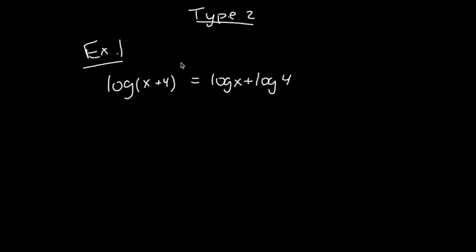So what I want to do is get a single log on the left and a single log on the right, and obviously everything has to have the same base. I have a single log on the left, x plus 4, but this is not a single log, so I need to combine these using the properties of logs. When I'm adding two different logs and bring them together to a single log, it becomes multiplication, x times 4, the product property of logs.